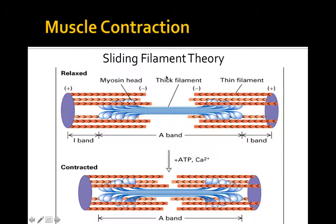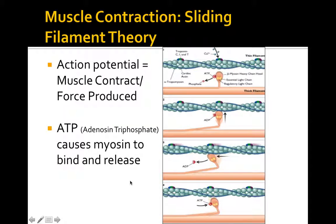Once the sarcoplasmic reticulum is stimulated, it releases calcium. Now we get into the sliding filament theory. When energy is introduced, calcium comes into play, causing the two ends of the I-band to come together toward the M-line—shortening and contraction. When an action potential travels down the nerve, muscle contraction occurs because of a release of calcium into the muscle fibers.